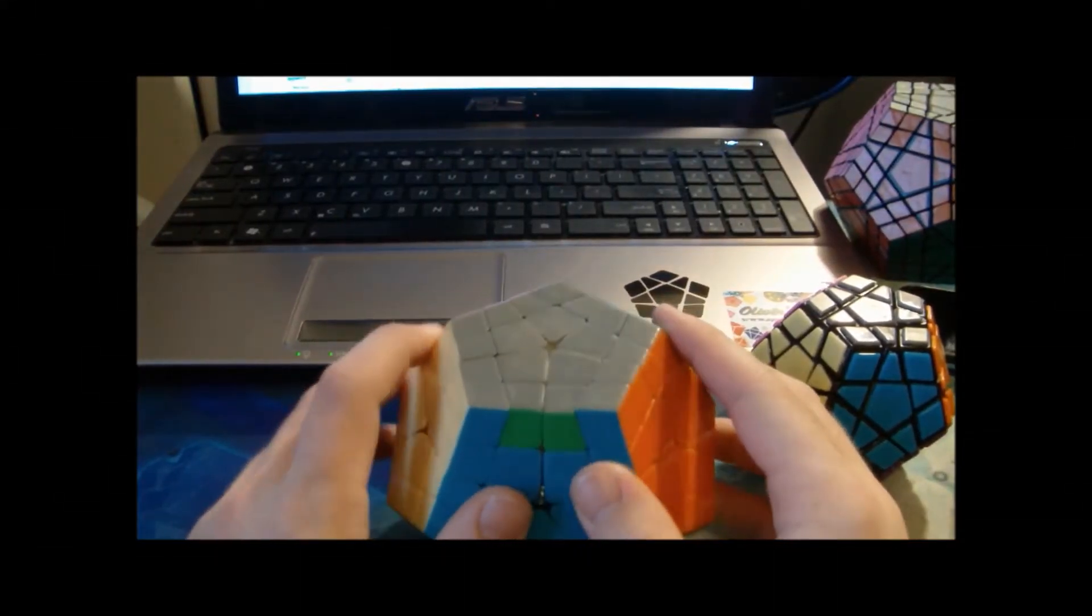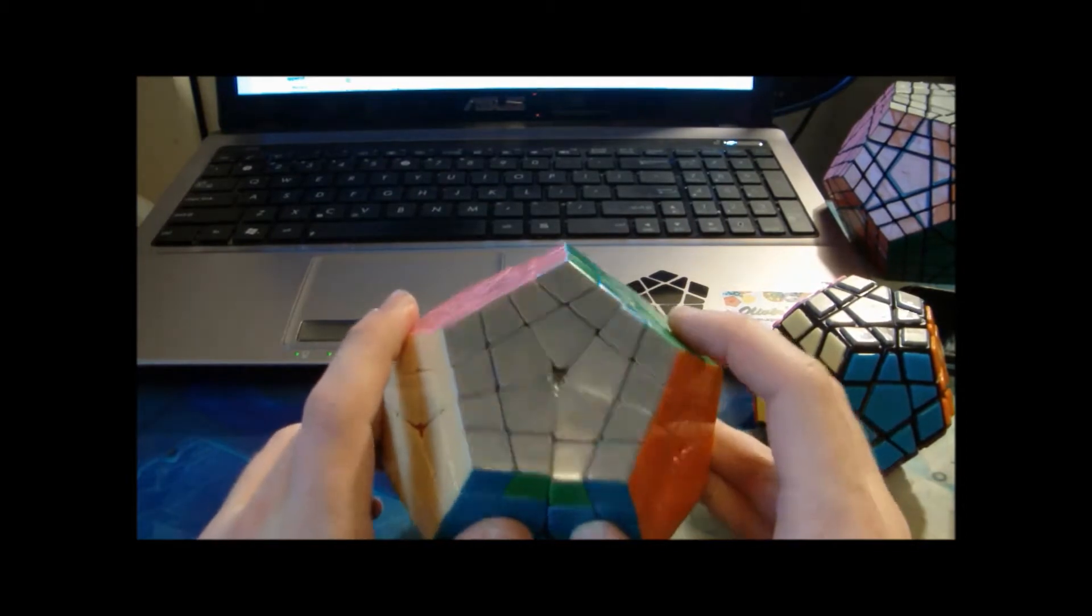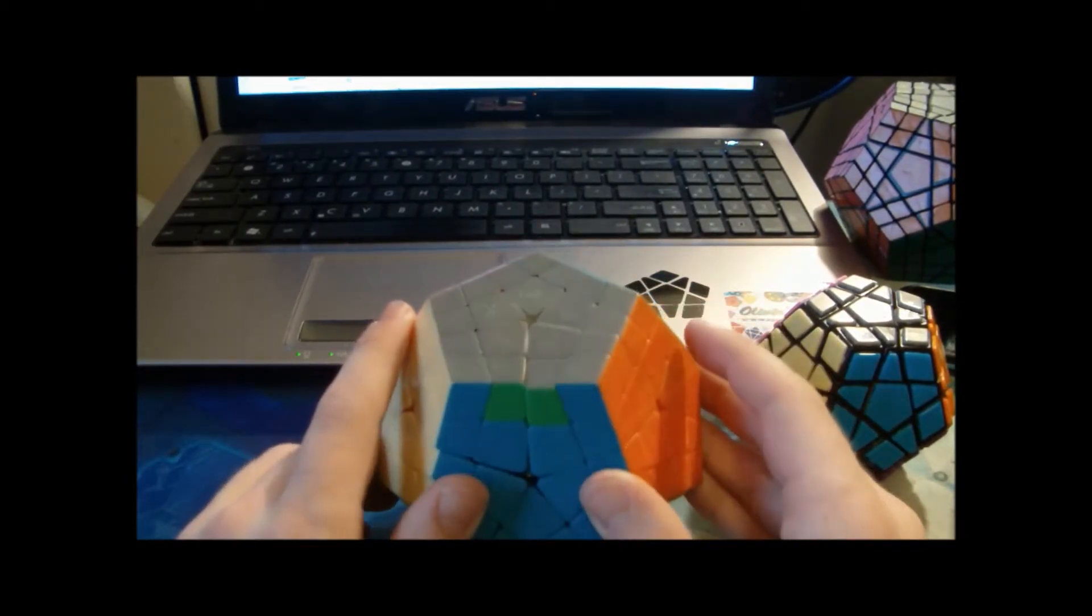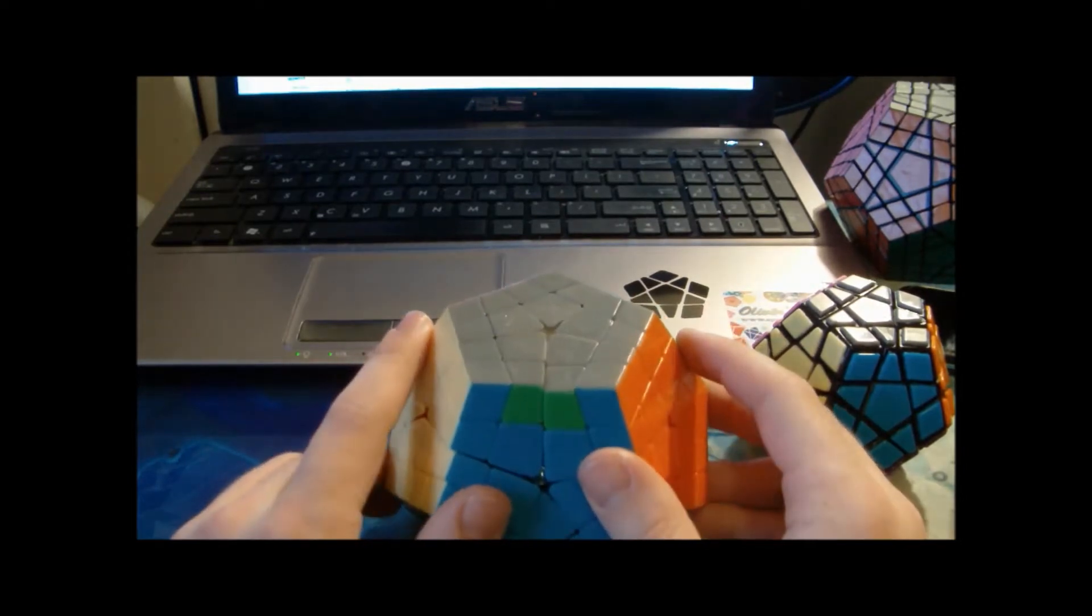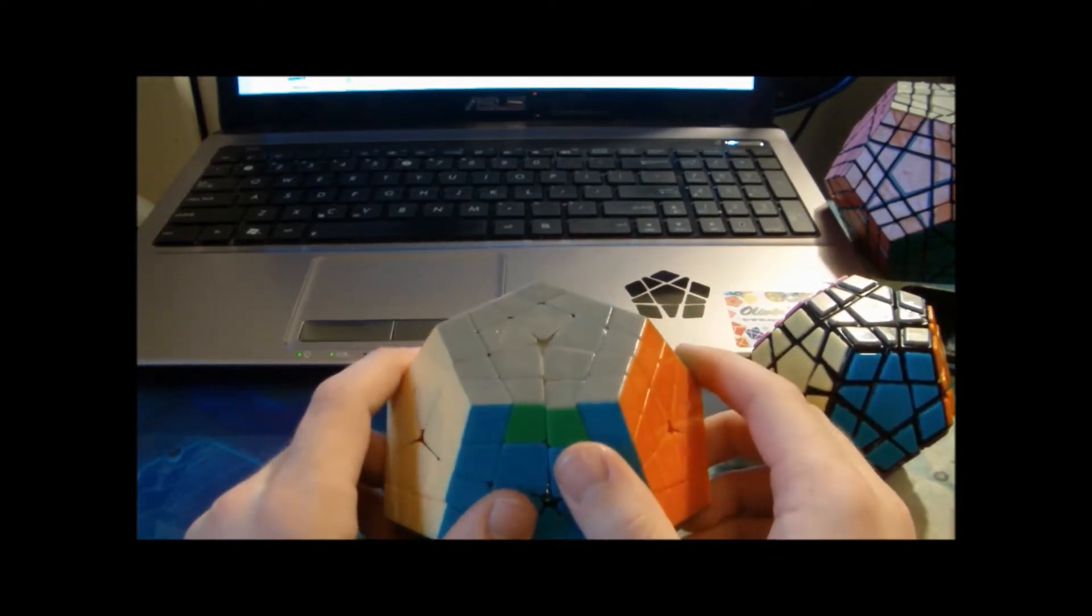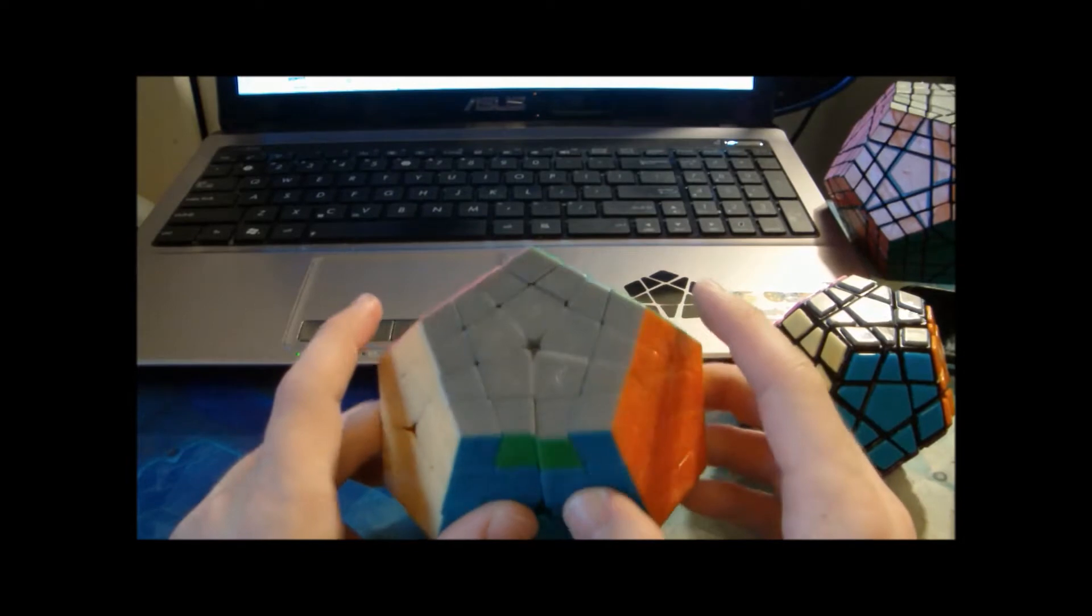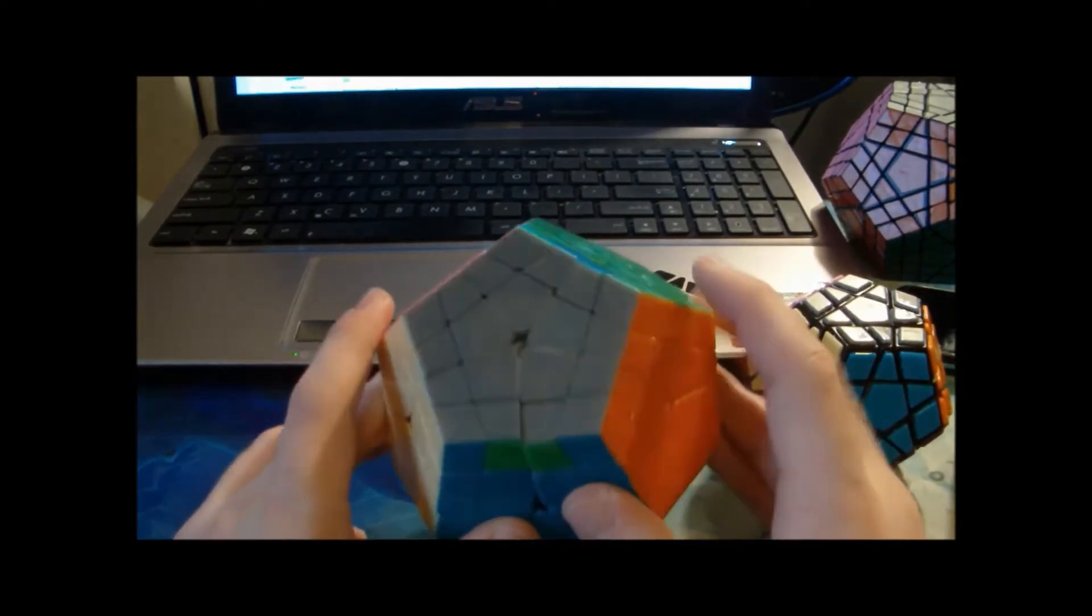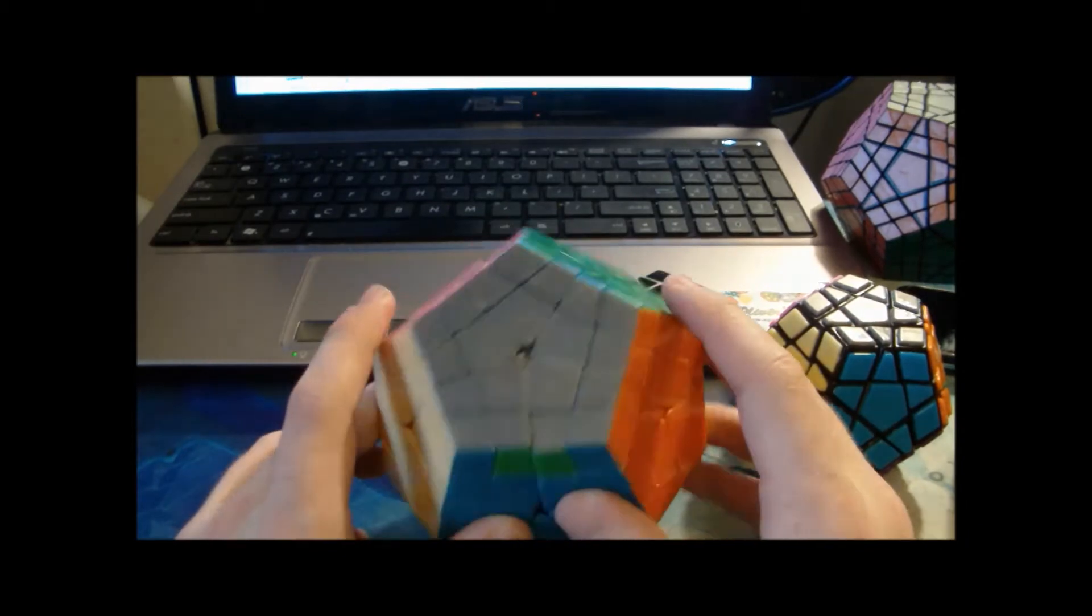This is going to be a video showing a really long master kilominx parity algorithm, but in my opinion it's very easy to remember. On master kilominx there's only permutation parity. It's basically a 4x4 megaminx, but there's no orientation parity.